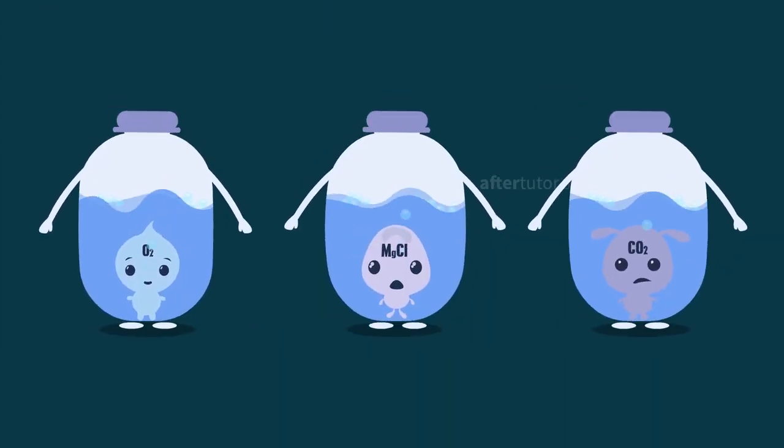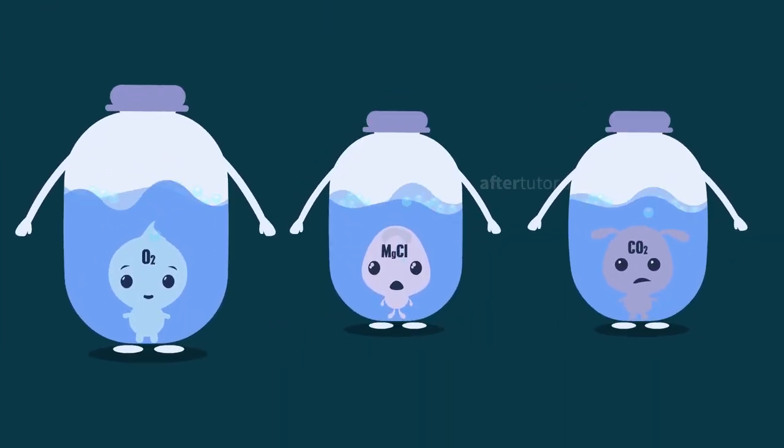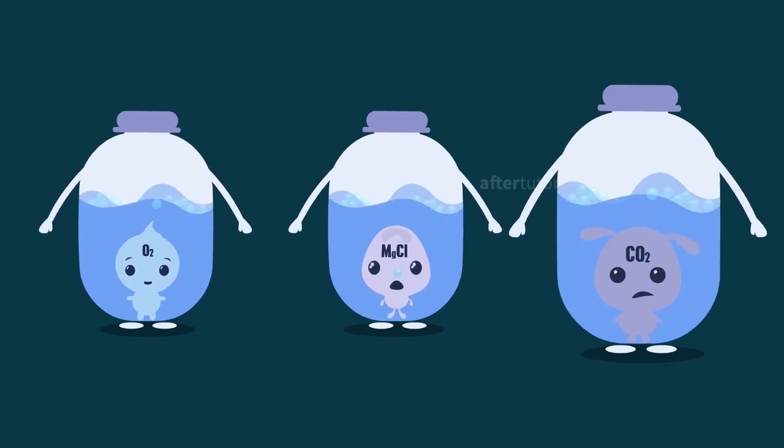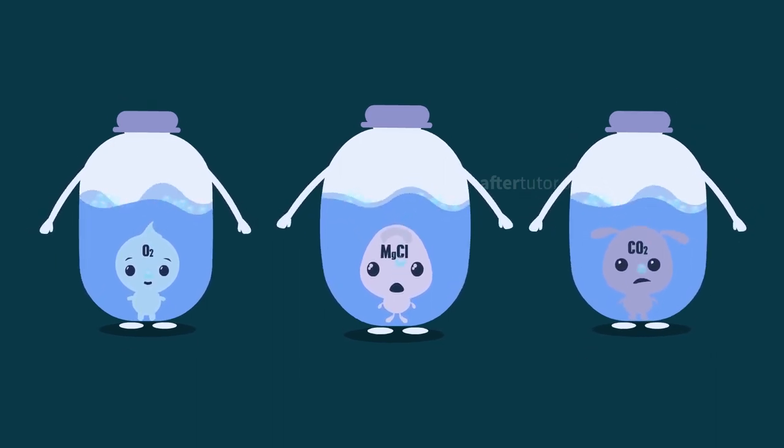Boiler corrosion is due to the presence of dissolved oxygen, dissolved carbon dioxide, and dissolved salts like magnesium chloride.